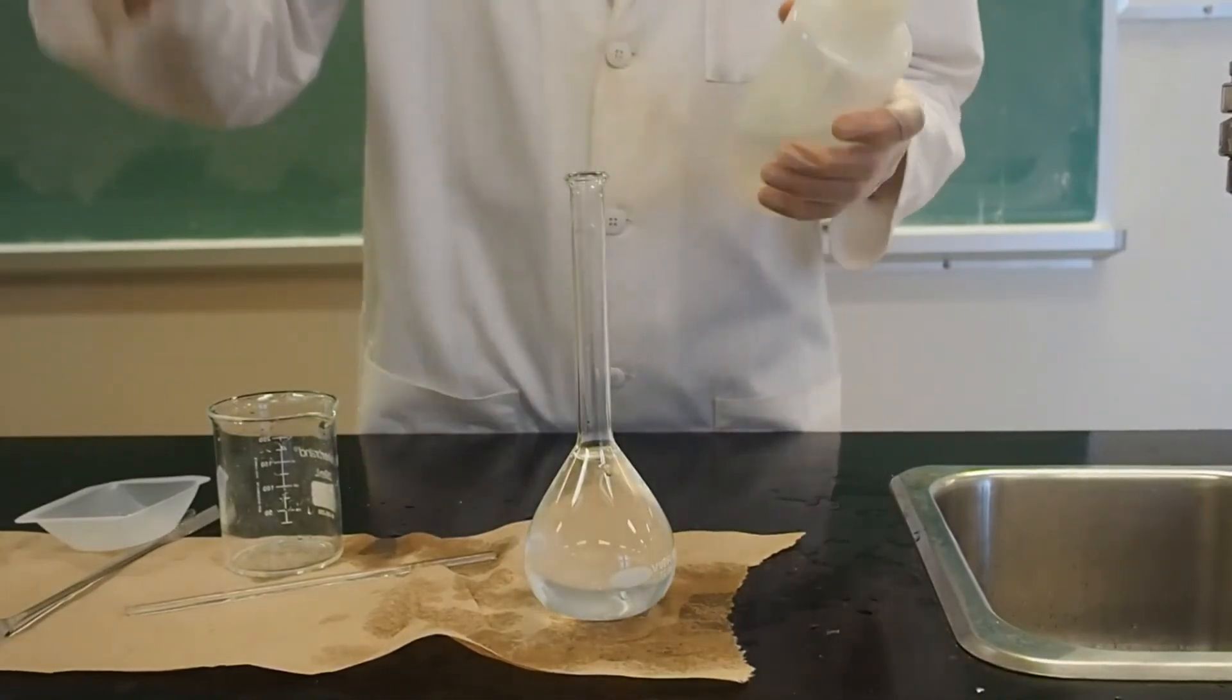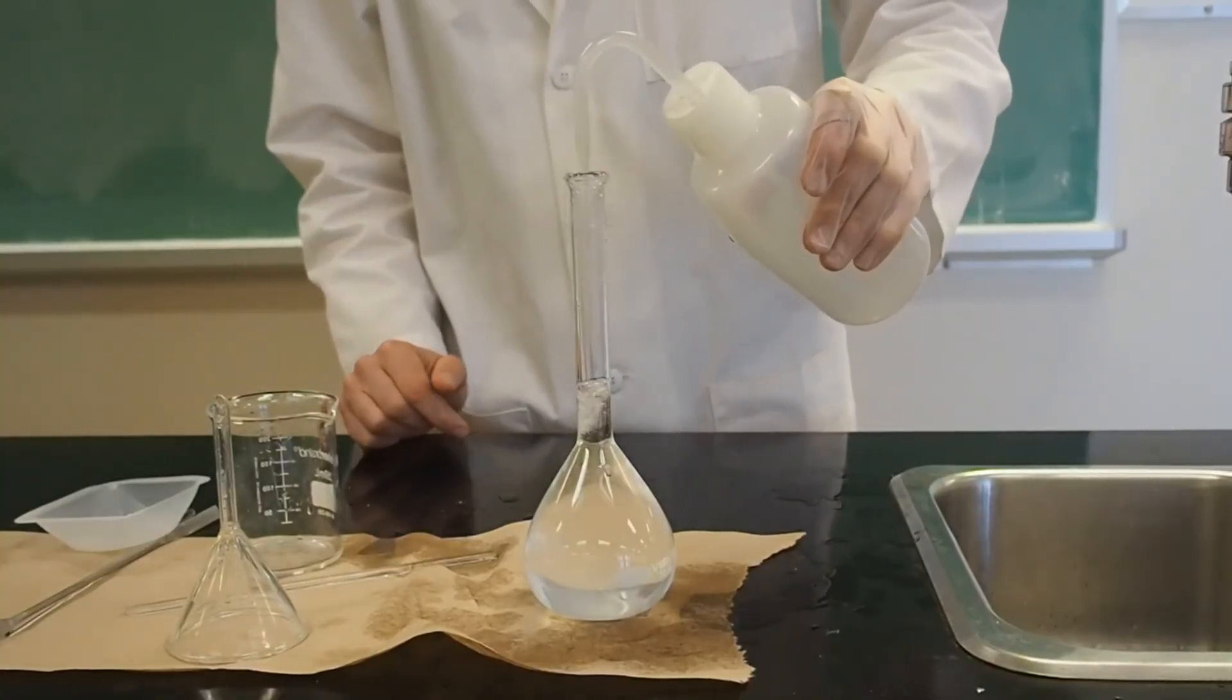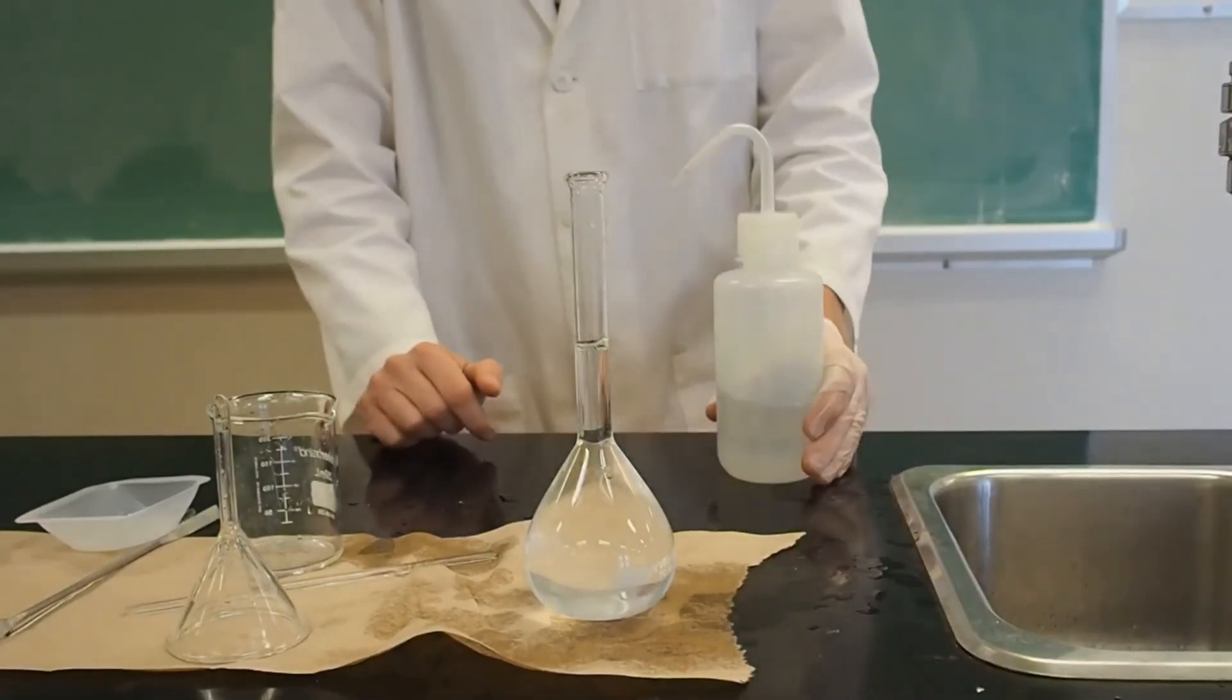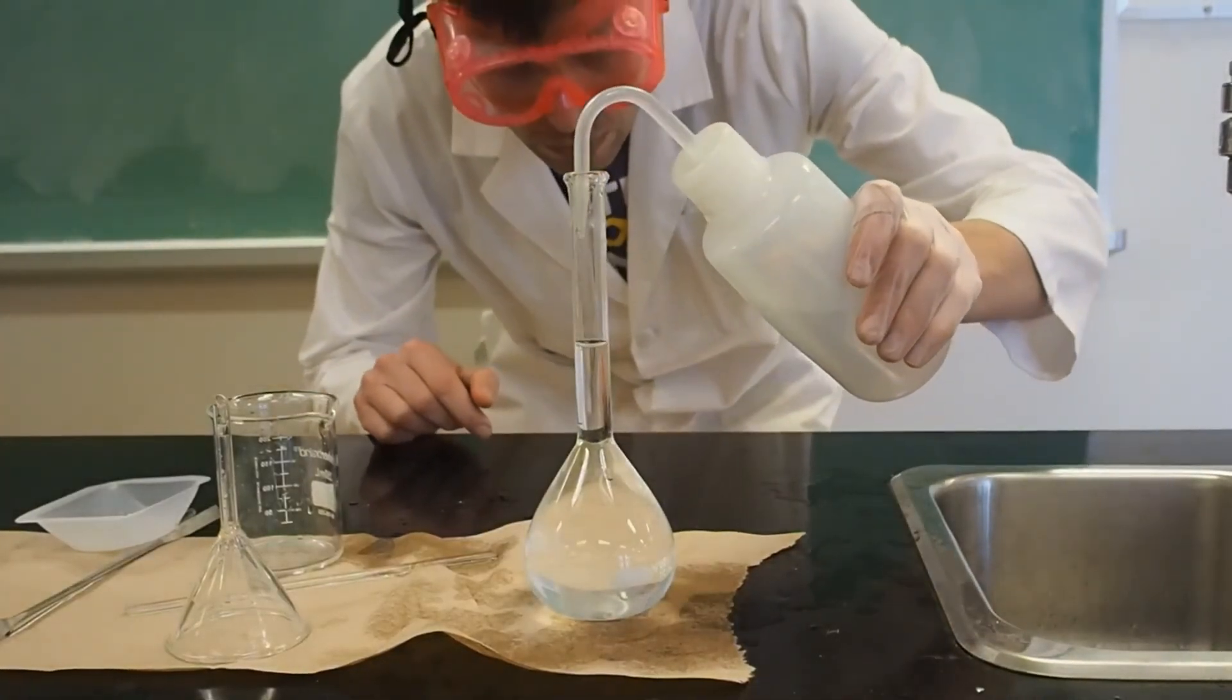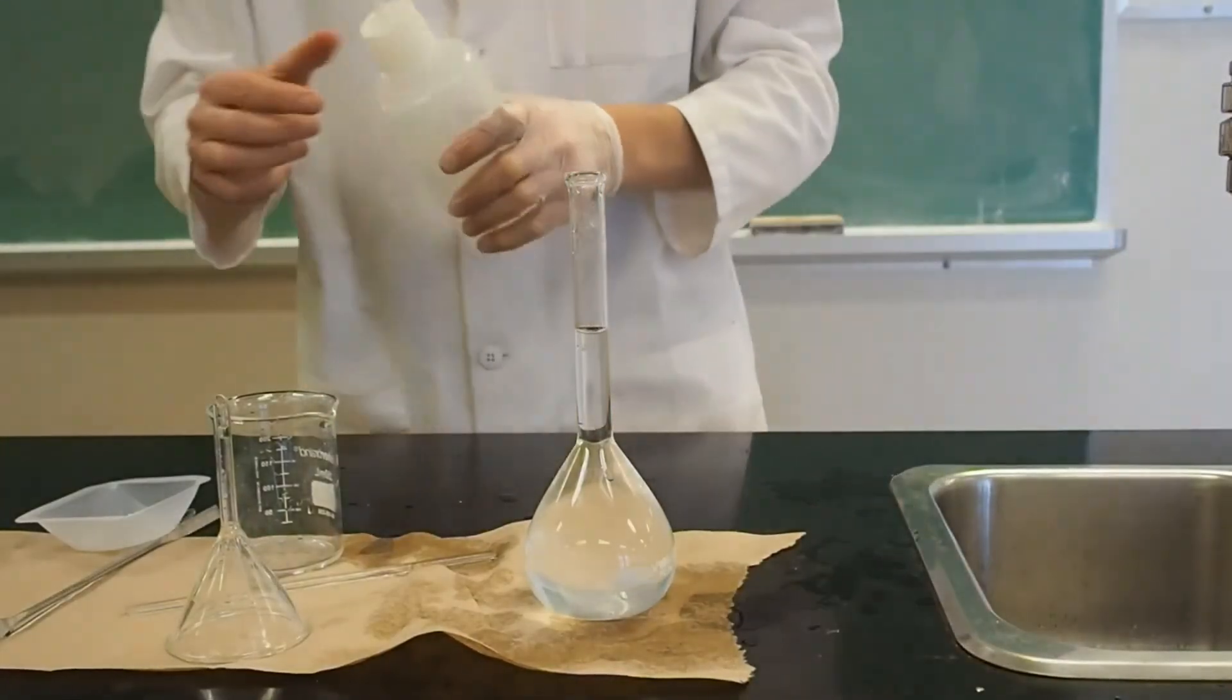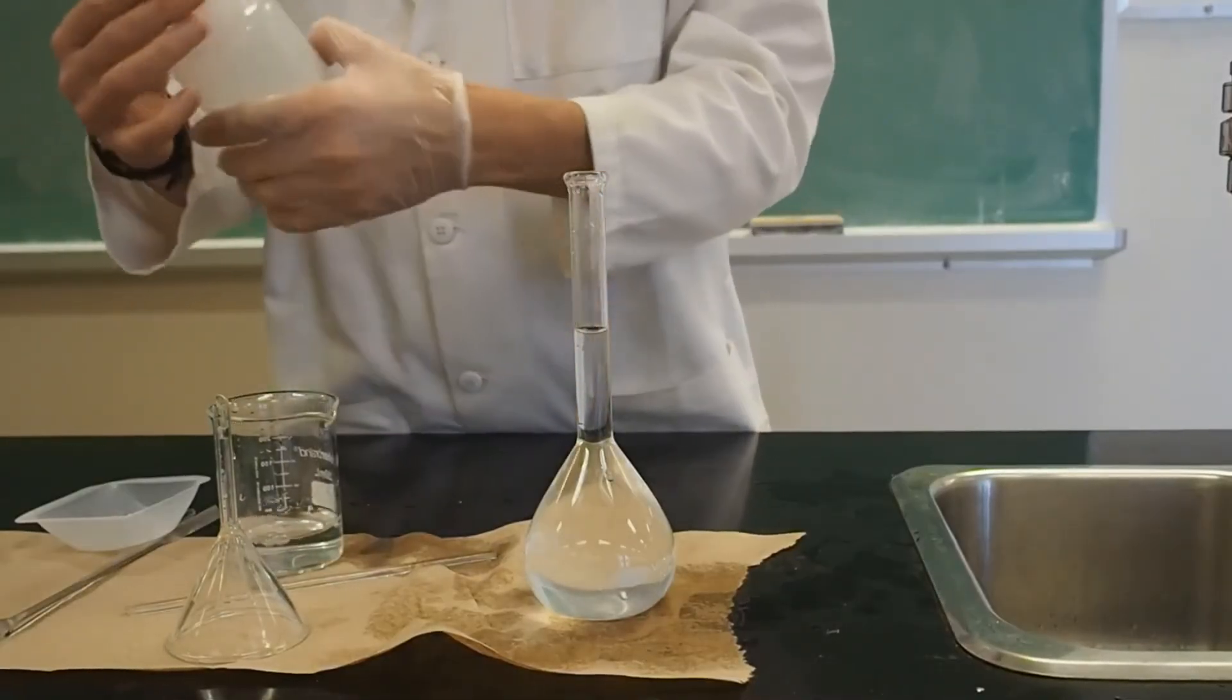Using the deionized water squirt bottles, fill the neck slowly. When you are within a centimeter of the fill line, begin adding water drop by drop. The easiest way to do this is by squirting some water onto the stir rod and allow the drop to fall off the end and into the flask.